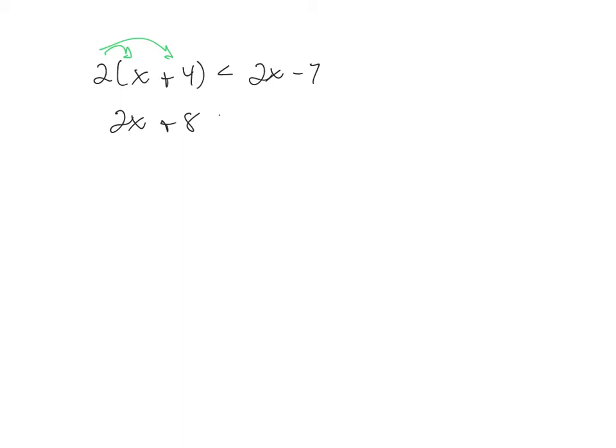2x plus eight. And then when you go to move the x's, on some of them they might reduce themselves out. So when that happens we want to say, do we have a true or a false statement? 8 is less than negative 7. False, so the answer is no solution.